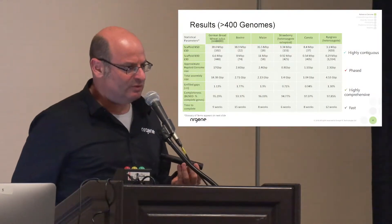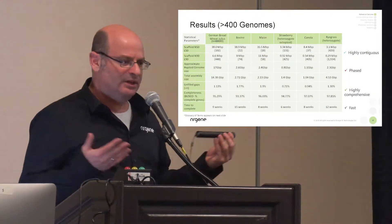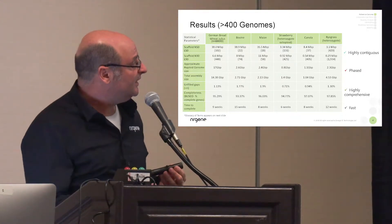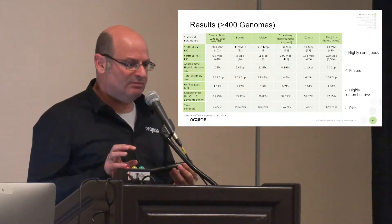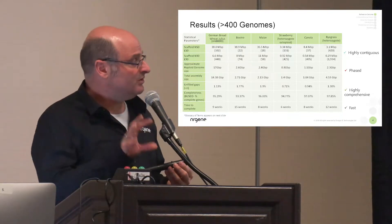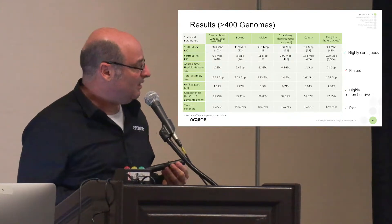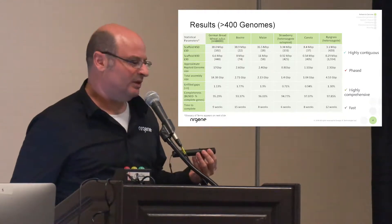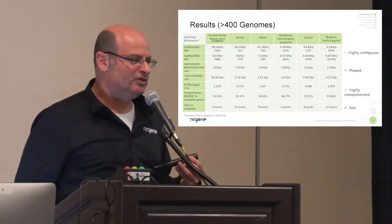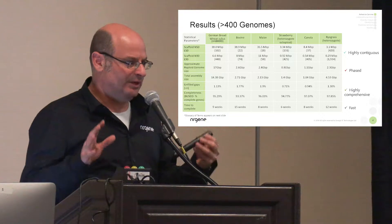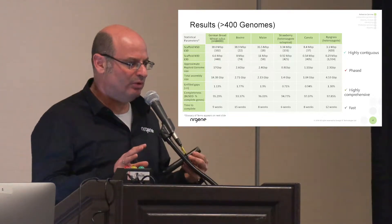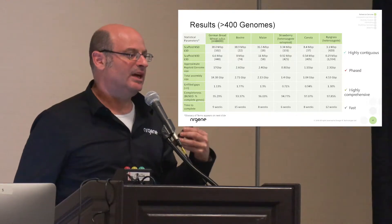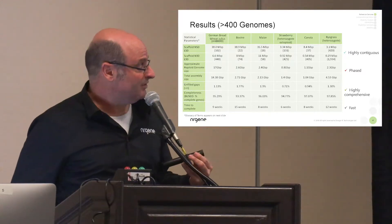EnerGene has assembled more than 400 genomes so far — very high quality projects across many assembly efforts. But I want to stress: EnerGene is not a de novo assembly company. We're using de novo assembly as the first step in orienting toward breeding applications.